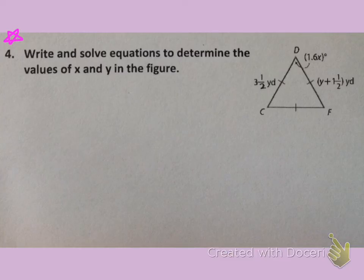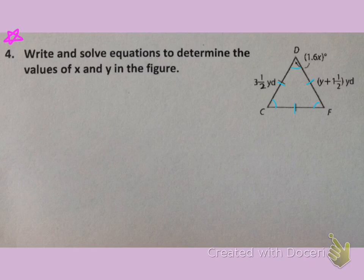Now this one I want you to do completely on your own. Remember that this is an equilateral triangle, meaning all of the sides are congruent to each other, all of the angles are equal to each other, and each angle is 60 degrees. Write and solve equations to determine the values of X and Y in the figure, and we will check this in class. Good luck!